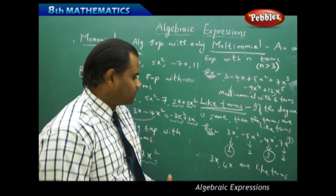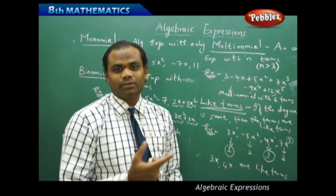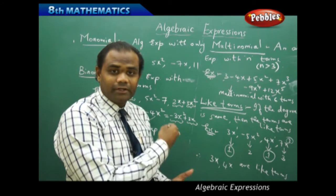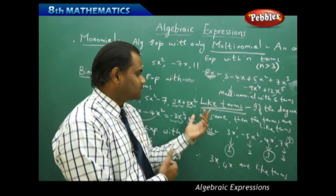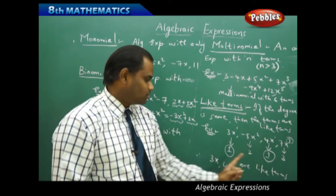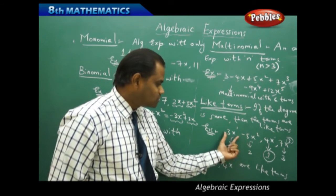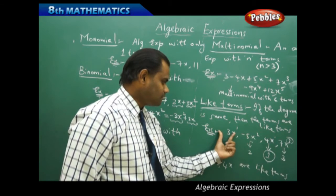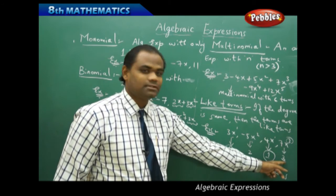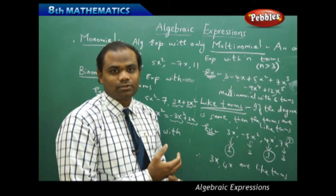Whenever we need to identify like terms, we search for the degree — if the degree is the same, they are like terms; if not, they are unlike terms. If the degree is not the same, the terms are unlike terms. For example, 3x and minus 5x squared have two different degrees, so they are unlike terms. Similarly, 3x and 7x cubed are unlike terms because the degree of 3x is 1 and the degree of 7x cubed is 3.